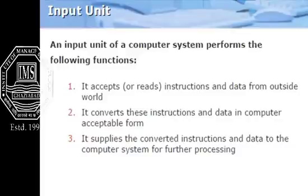The input unit of a computer system accepts data or instructions from the outside world and converts these instructions and data into a computer-acceptable form — that is, binary form — because a computer can only understand binary language as it is an electronic device. It then supplies the converted instructions and data to the computer system for further processing.